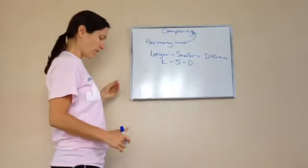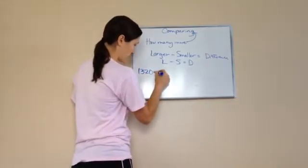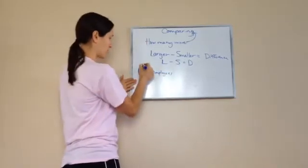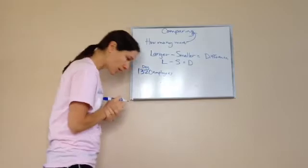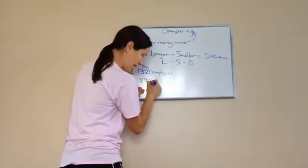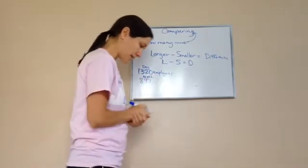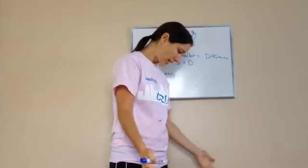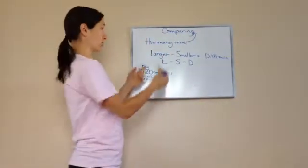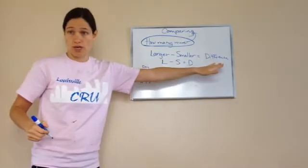So let's use this equation for this word problem. During the day, 1,320 employees work at the toy factory. This is during the day. Then it says, at night, 897 work at night. Then it says, how many more employees work at the factory during the day than at night? Well, you heard this. How many more? So you're going to take these two numbers and put them in this equation.